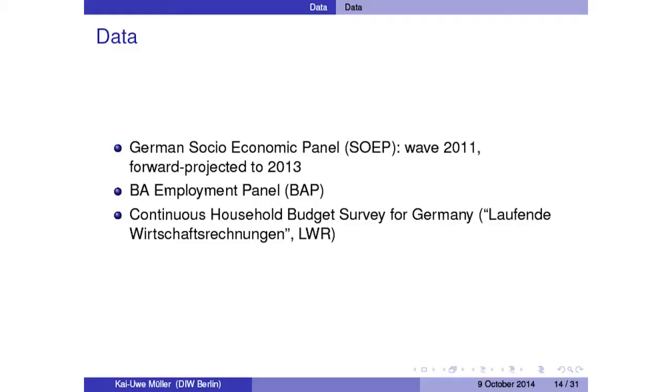We use different datasets for this exercise. The most important is the German household panel — the Socio-Economic Panel (SOEP). Then for the demand estimation we use administrative data: the employment panel from the Federal Employment Agency. And we use data on consumption prices and consumption behavior.